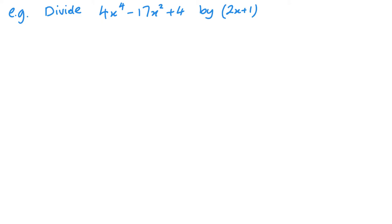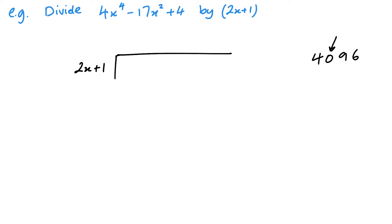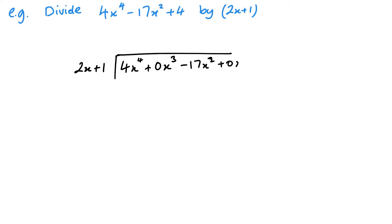For this next example, we're dividing a quartic by the linear term 2x plus 1. When setting this up — very much like in numerical long division where a zero is important for place value — I need to write: 4x to the power of 4, then 0x cubed (to keep place value), minus 17x squared, plus 0x, plus 4. It's very important to keep that place value.